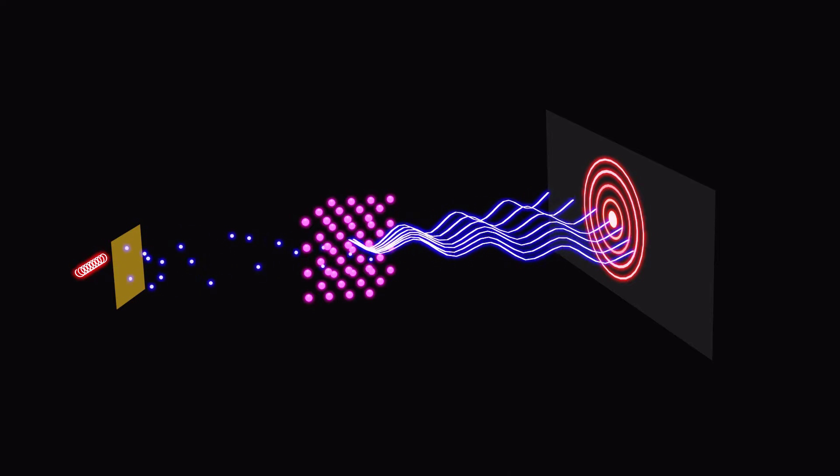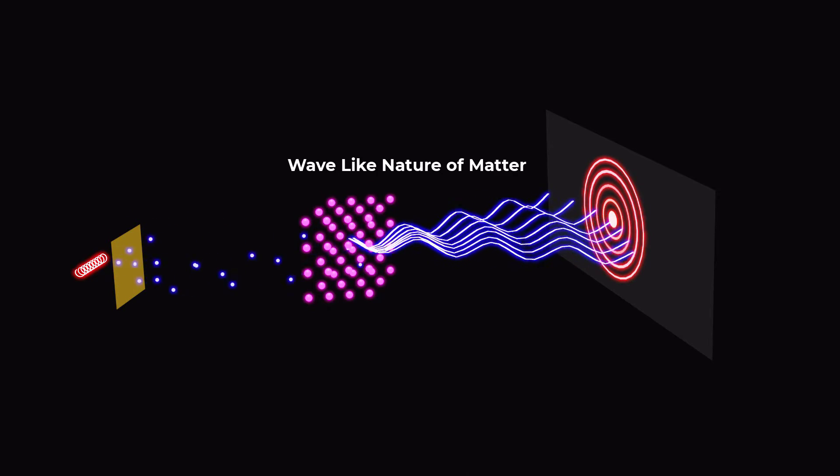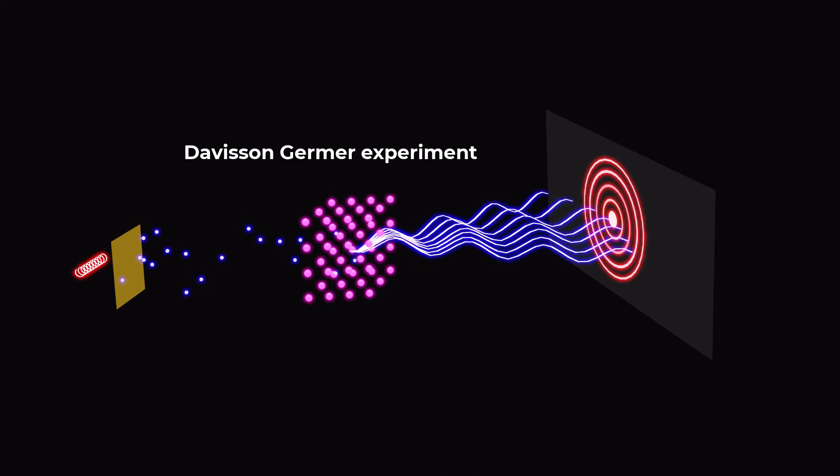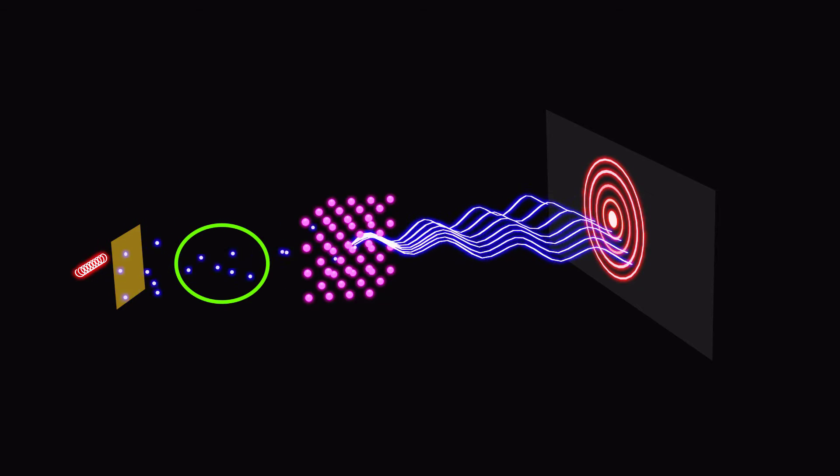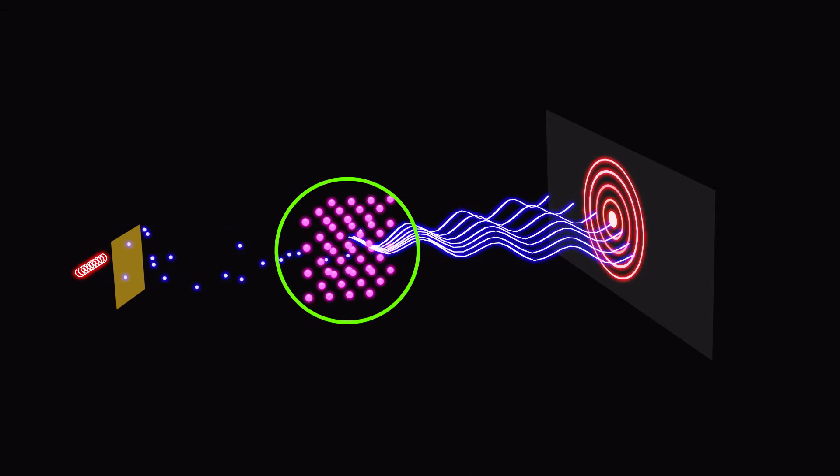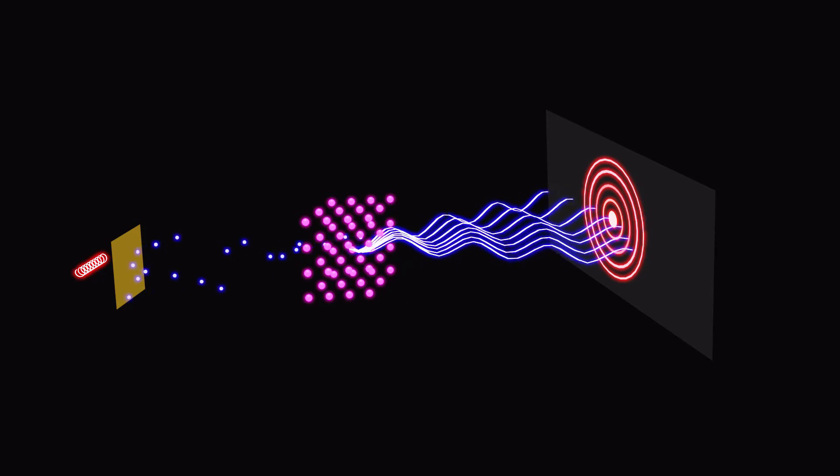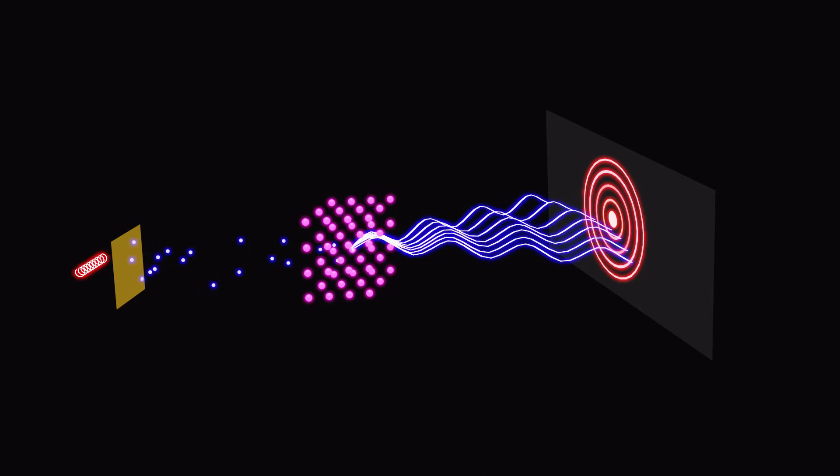One of the most famous experiments that demonstrated the wave-like nature of matter is the Davison-Germer experiment, which showed that electrons could be diffracted by a crystal lattice, just like light can be diffracted by a grating.